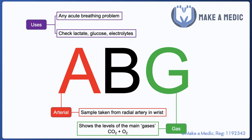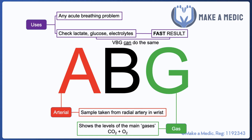The machines we use are also able to give additional information — most importantly haemoglobin, lactate, glucose, and electrolytes. The benefit of blood gases over sending lab bloods is that you can get a result within seconds. In most hospitals there will be a few blood gas machines where you take the syringe containing the blood sample, push it into the machine, and get a printout within seconds.